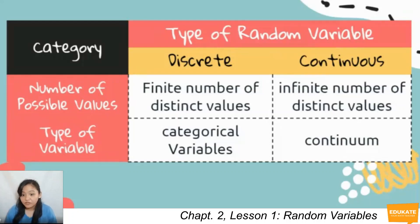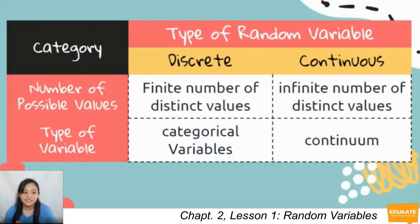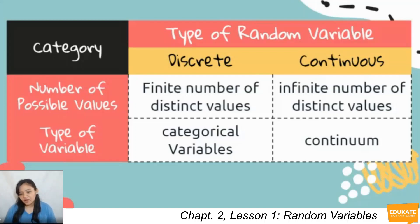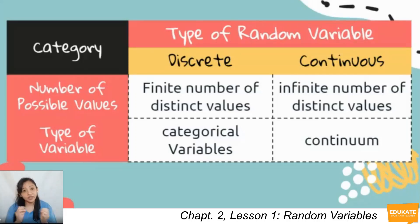There can also be ordinal variables, like how much a person likes adobo on a scale of 1 to 10. For continuous random variables, you have an infinite number of distinct values and they lie on a continuum. Examples are the time a person can hold his or her breath, the height, weight, or BMI of a person if measured very accurately, and the time a person takes to bathe.